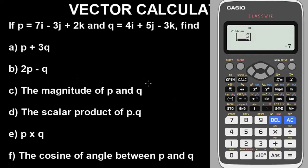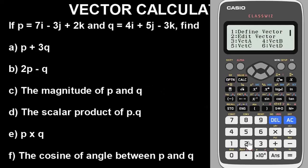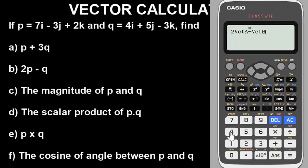Now for part B, we have to find 2P minus vector Q. Go to option — vector A is vector P. That question has 2P, so input 2 times vector A, then minus vector Q, which is option vector B. Press equal. The answer is 10i minus 11j plus 7k. This is the answer for the subtraction of the two vectors. Now let's solve question C.